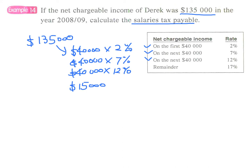So the remainder has a rate of 17%. The idea of finding the salary tax payable is to split the net chargeable income into several parts based on the tax bands in the table.